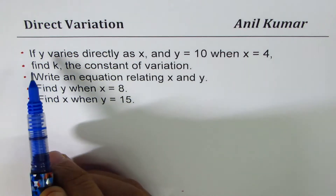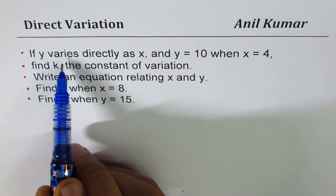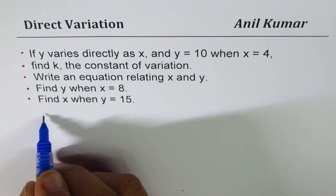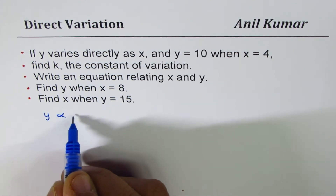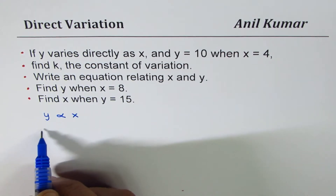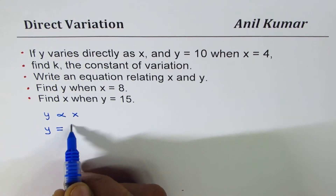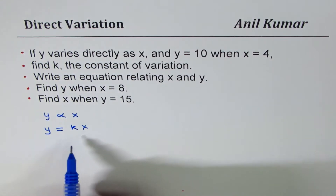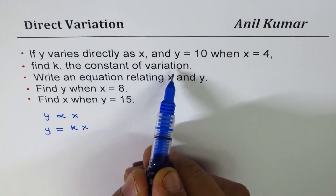First, let's understand what it means when we say y varies directly as x. That means y is proportional to x. When we convert this to an equation, we write y equals to some constant k times x. Now this k is called the constant of variation.